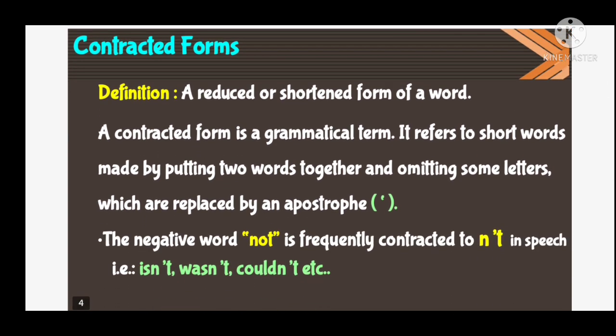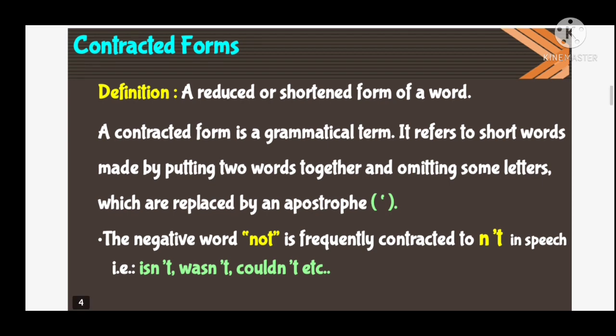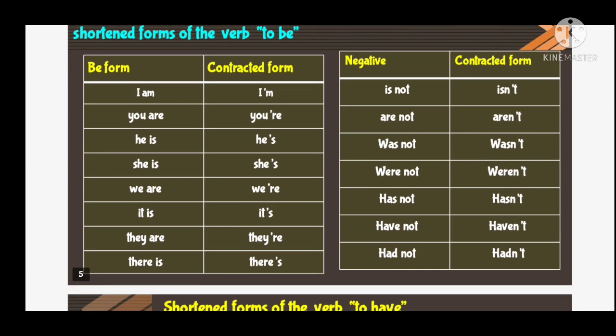Now let us know what is the definition of contracted form. A reduced or shortened form of a word. A contracted form is a grammatical term. It refers to short words made by putting two words together and omitting some letters, which are replaced by an apostrophe. The negative word 'not' is frequently contracted to apostrophe-t, meaning 'not' in speech — that is: isn't, wasn't, couldn't, etc.